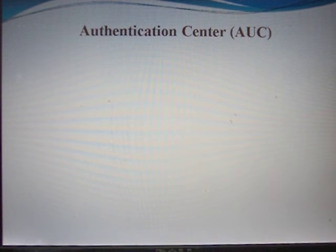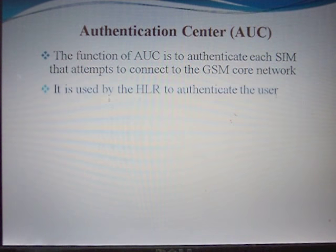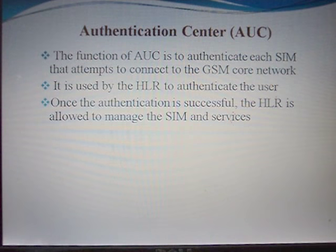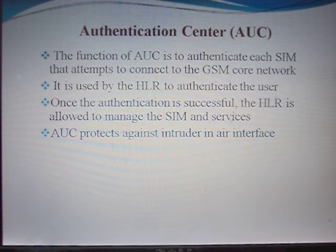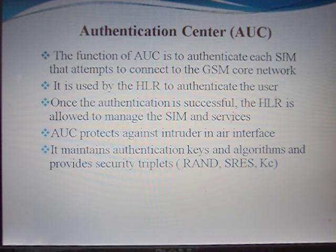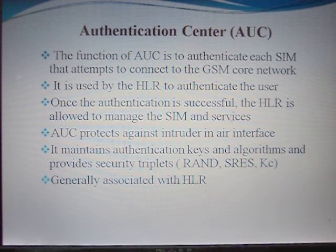The Authentication Center (AUC) functions to authenticate each SIM that attempts to connect to the GSM core network. It is used by the HLR to authenticate the user. Once authentication is successful, the HLR is allowed to manage the SIM and services. AUC protects against any type of fraud on the air interface. It maintains authentication keys and algorithms and provides security triplets to the subscriber in the form of a random number, signed response keys, and ciphering keys. AUC is generally associated with the HLR.